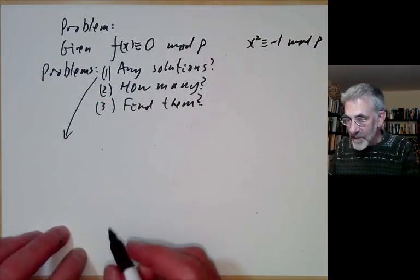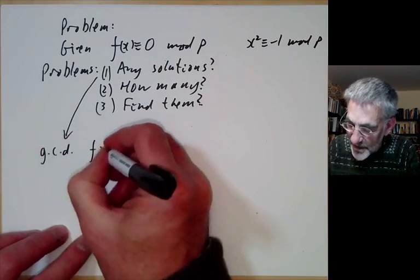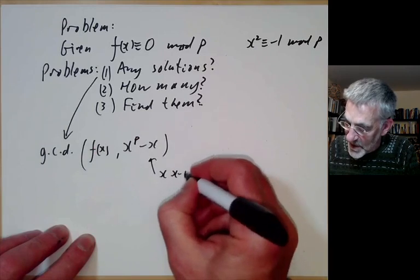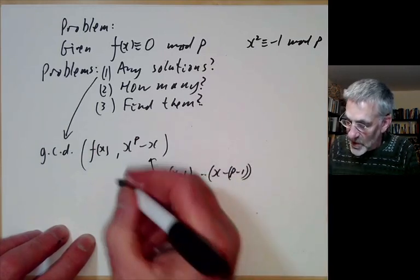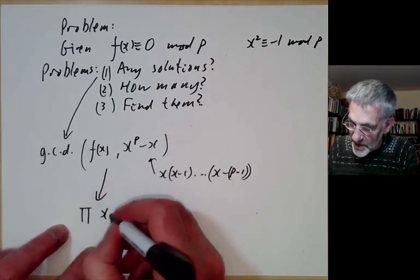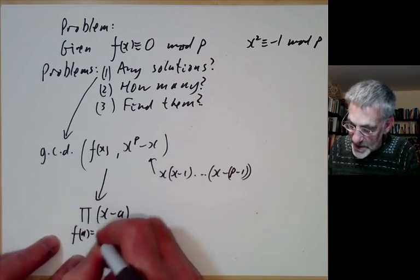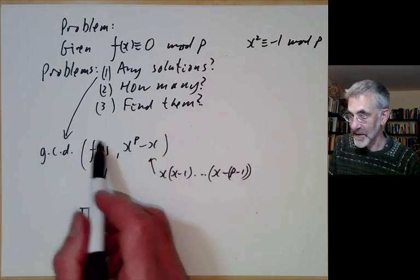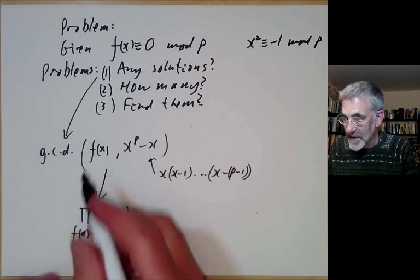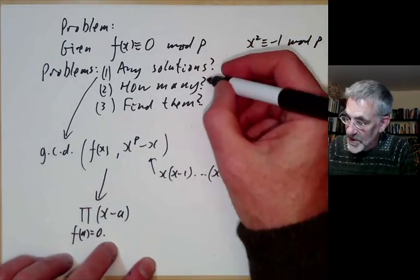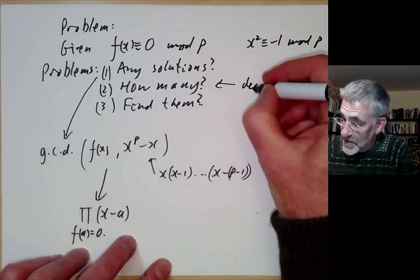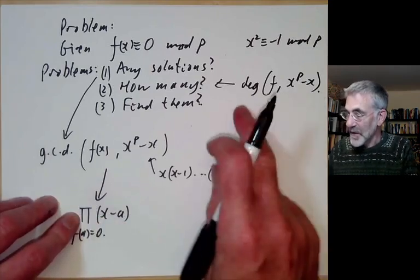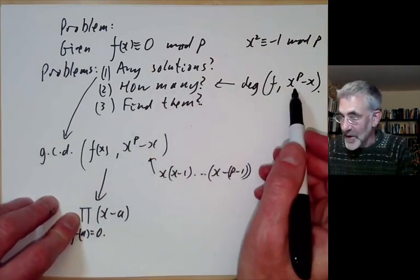One neat way to find the number of solutions is to take gcd(f(x), x^p − x). Recall x^p − x = x(x−1)·…·(x−(p−1)), so the gcd is just the product of (x−a) where f(a) = 0. Thus the number of distinct solutions equals the degree of gcd(f(x), x^p − x). This is rather neat — we can find how many solutions there are without actually finding them all.